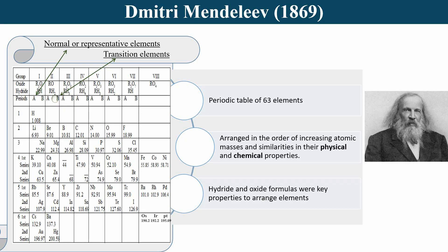In 1869, Mendeleev observed that certain groups of elements tended to form similar hydrides and oxides. For example, elements of Group 1 — alkali metals — form hydrides with the formula RH and oxides with the formula R₂O, where R represents the metal. This pattern repeated in other groups as well, helping Mendeleev establish the periodicity of elements. The systematic consideration of hydrides and oxides contributed to the success of Mendeleev's periodic table in predicting properties of undiscovered elements. He also divided elements within the same group into two subgroups labeled A and B.